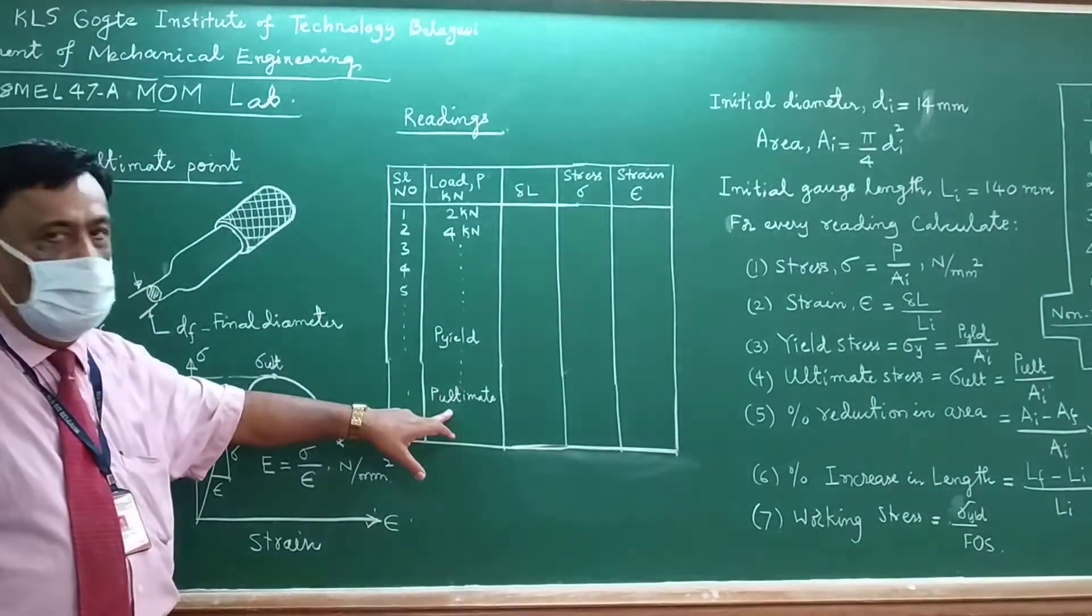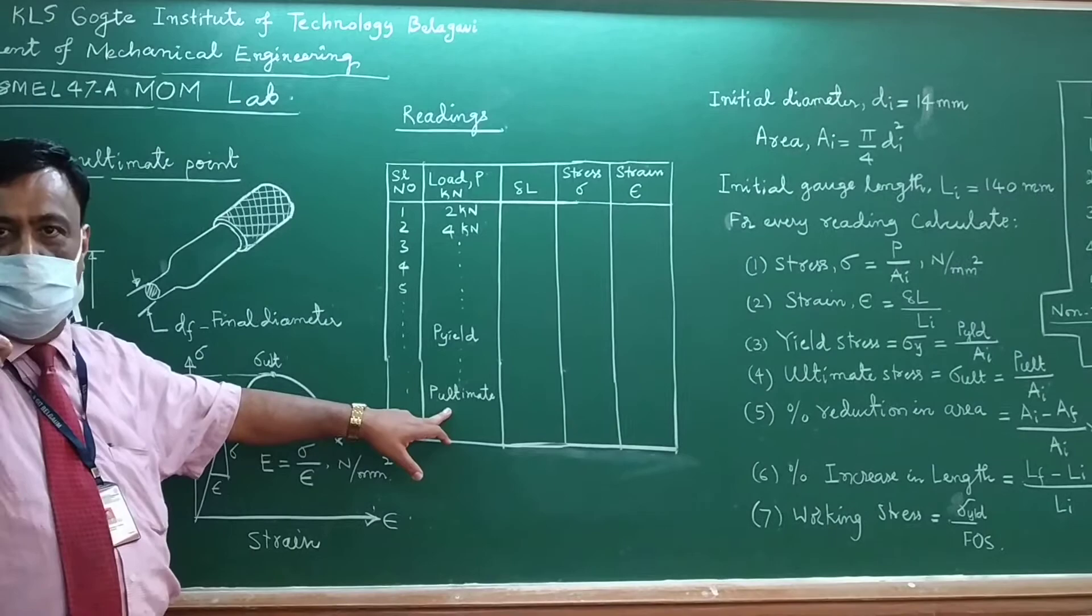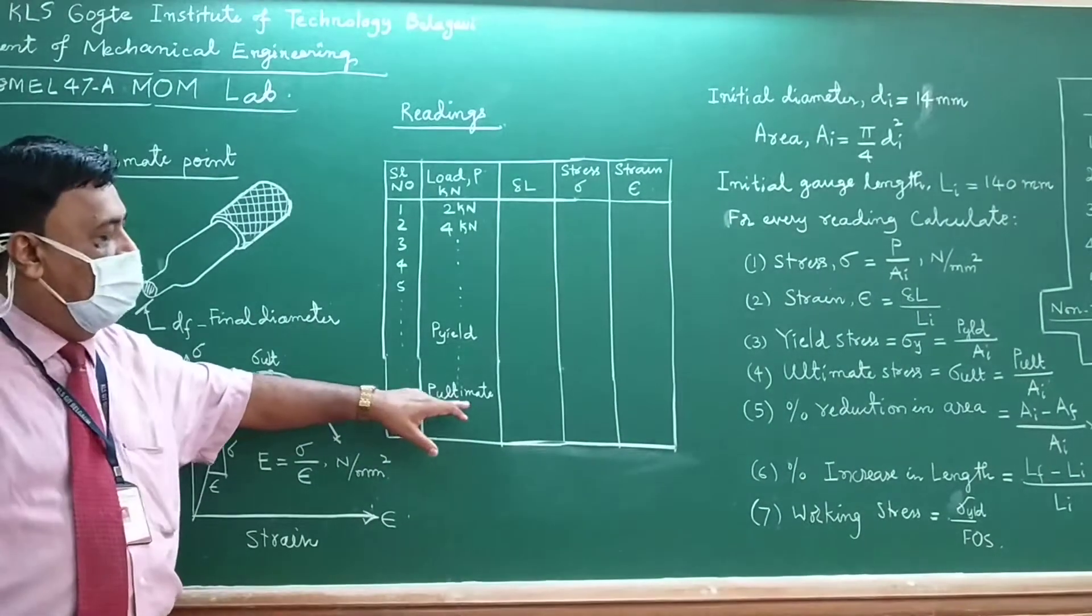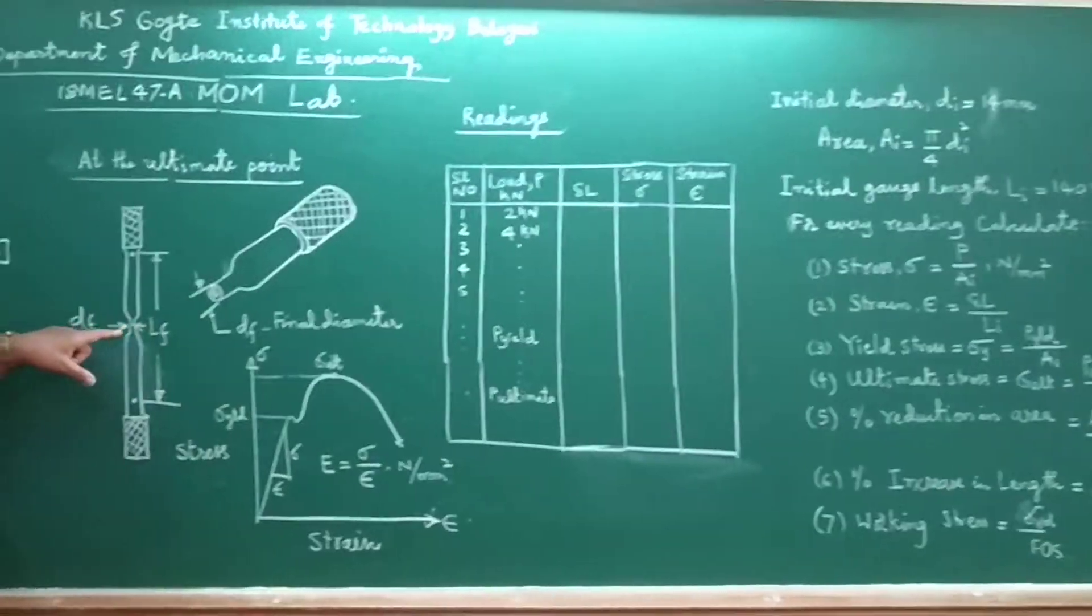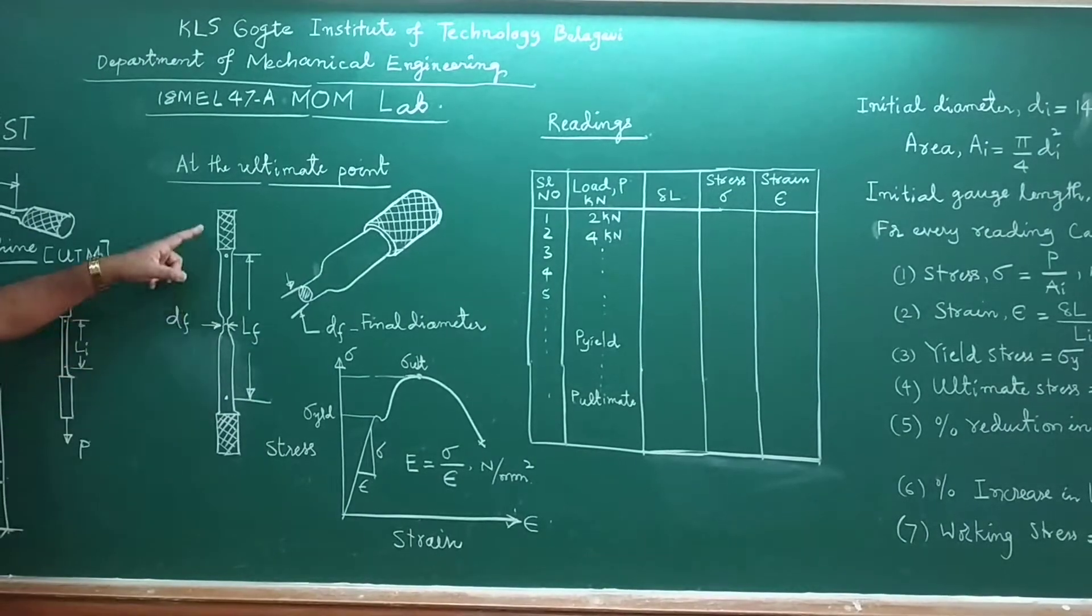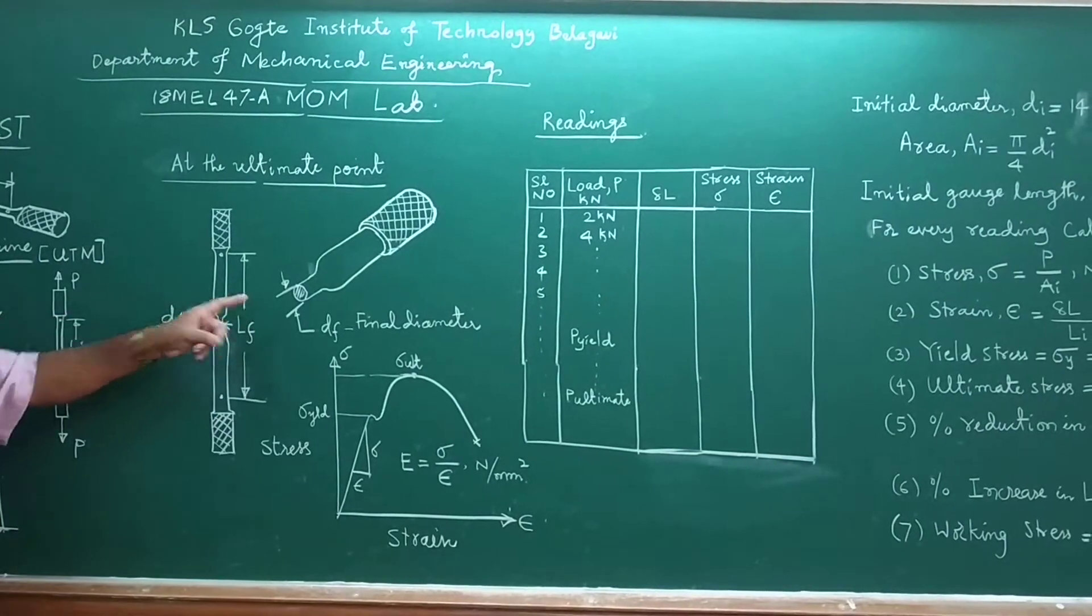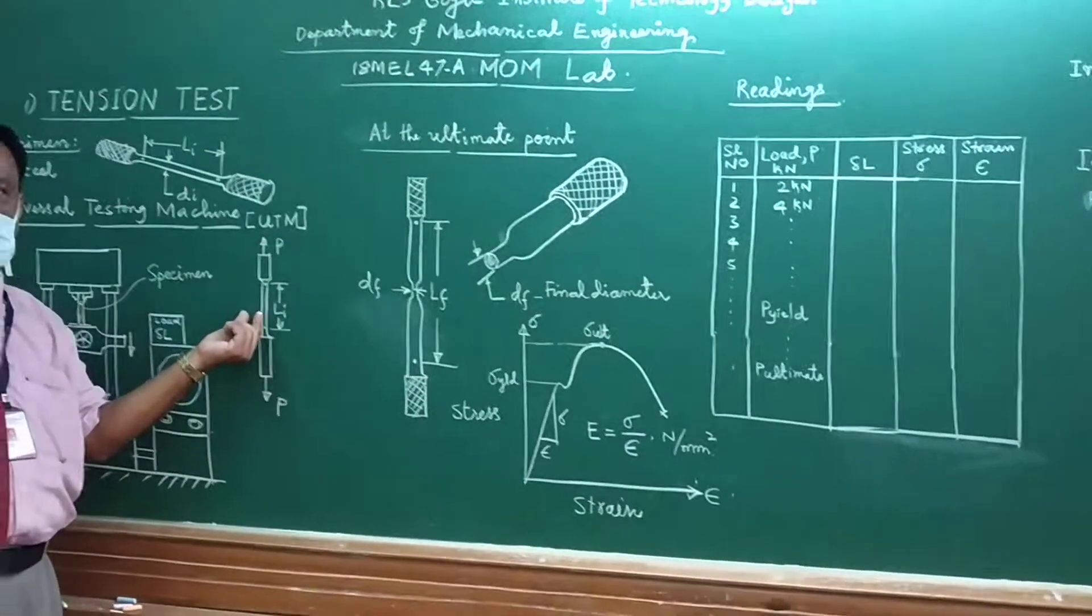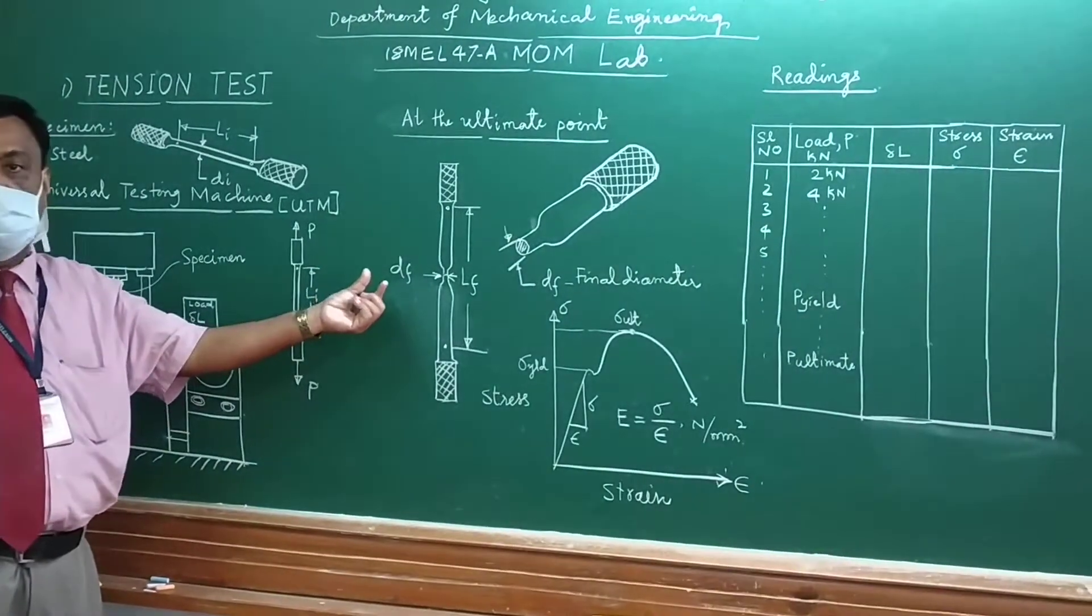When you continue, we will get the last point called the ultimate point, where neck formation takes place. The specimen will start undergoing a reduction in its diameter, and this is called neck formation.